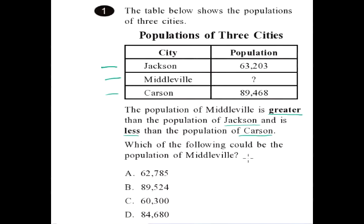So what is this question asking? Well, they're saying that the population of Middleville is greater than the population of Jackson, which means this number here is more than 63,203. And they also said that the population of Middleville is less than the population of Carson, which is 89,468. So this number for Middleville must be in between 63,203 and 89,468.